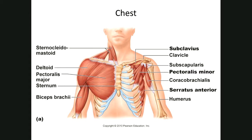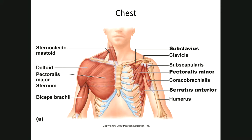For the muscles of our chest: here is the anterior portion of the sternocleidomastoid, the deltoid muscles, the pectoralis major, pectoralis minor, coracobrachialis, and biceps brachii. The serratus anterior — when you take a deep breath, these contract and pull your ribs up, while your diaphragm contracts and pulls down. Together they increase the size of your chest cavity.